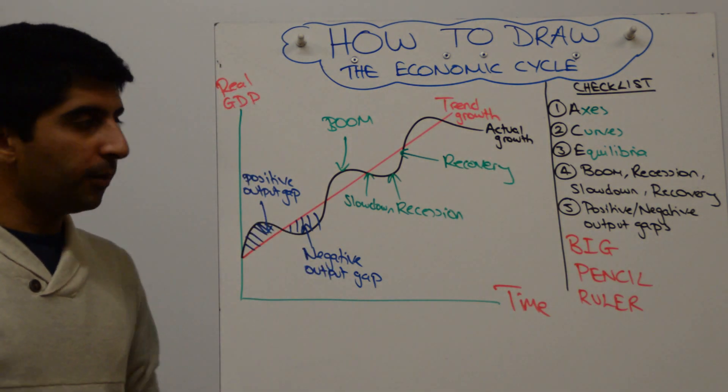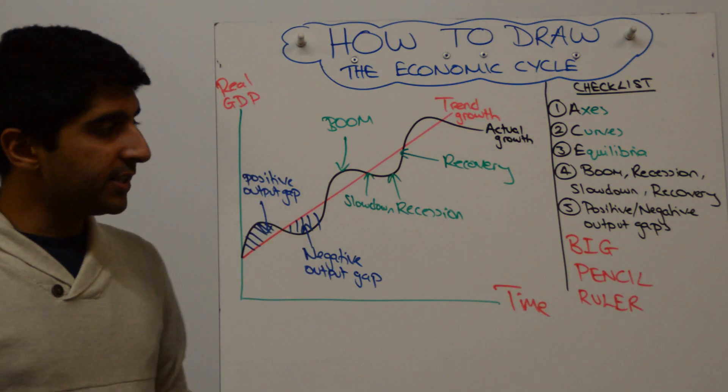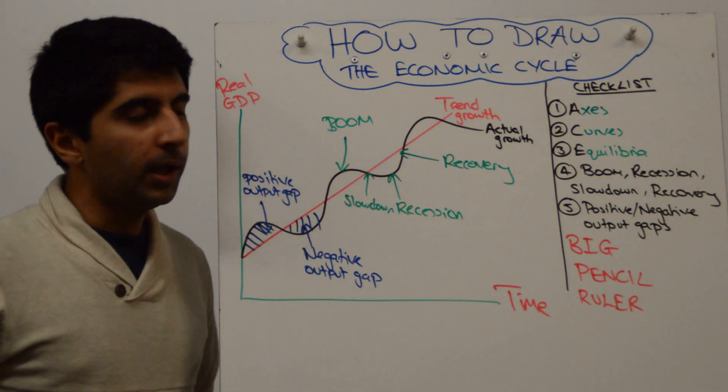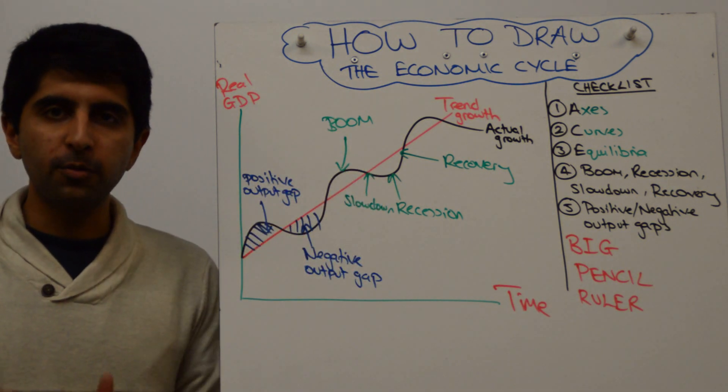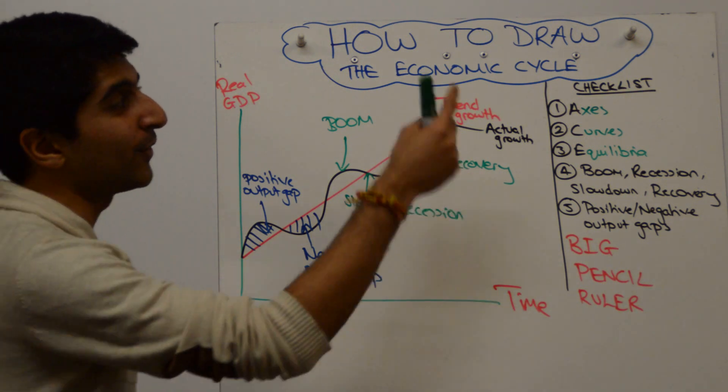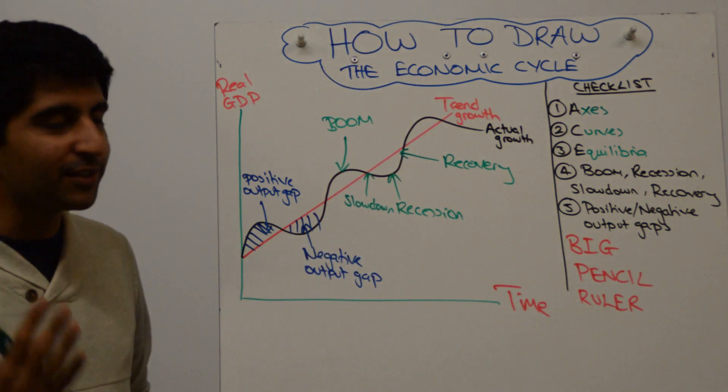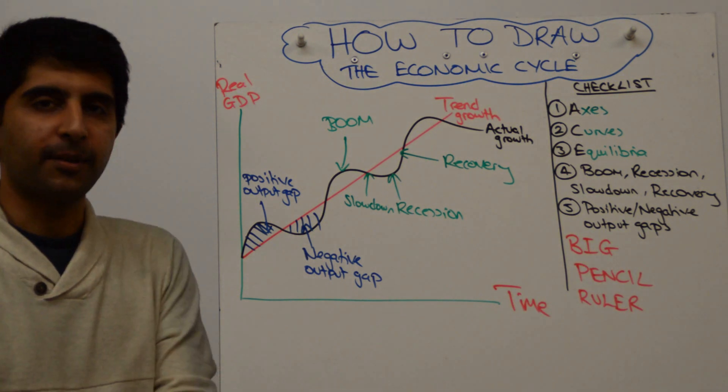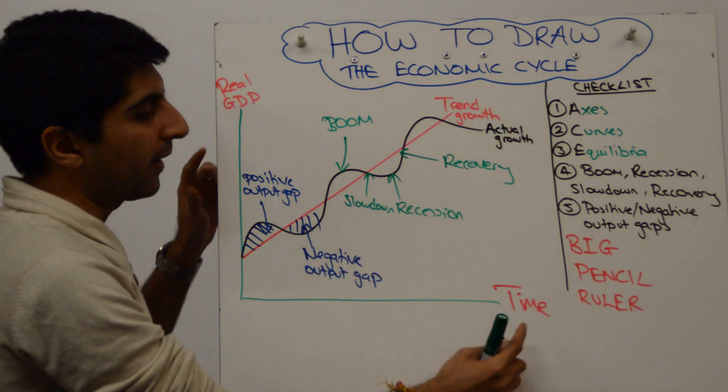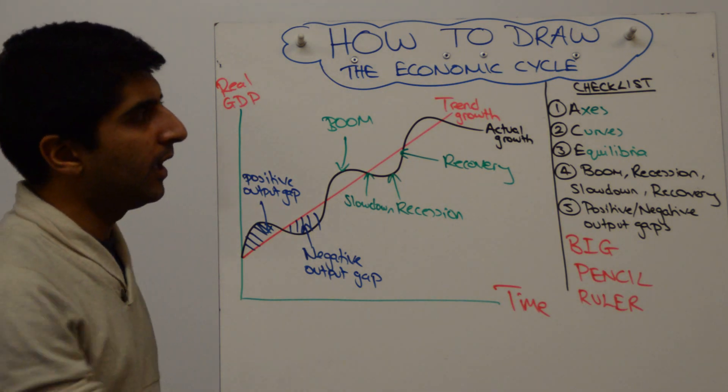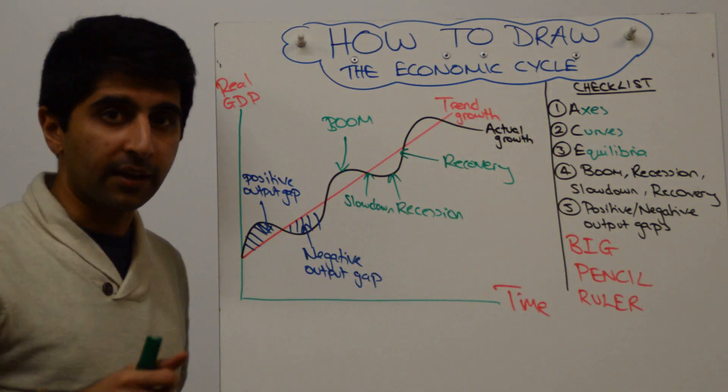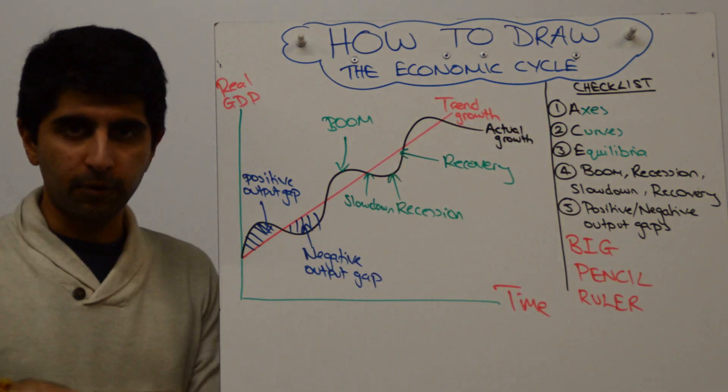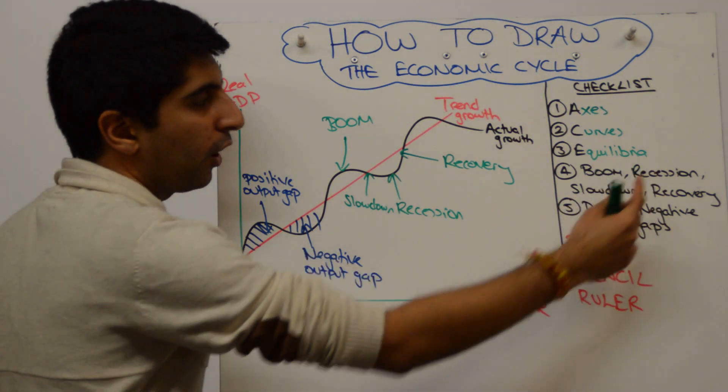So this economic cycle diagram is quite detailed. There are quite a few things to show. Do not miss any of these things out. How do you make sure that none of these things will be missed out? Well, you go to your checklist. Remember this checklist is mental. But you must keep it in your mind so that you don't mess up something on this diagram. Have you labeled your axis? Yes. Have you labeled the curves? Yes. There are no equilibrium on this diagram so we can ignore that.